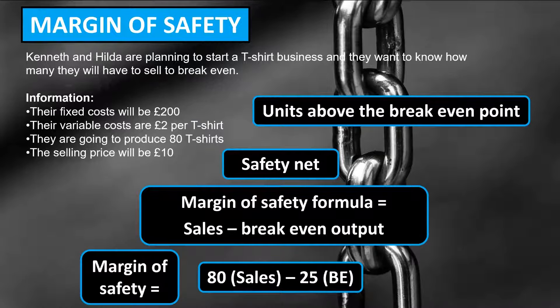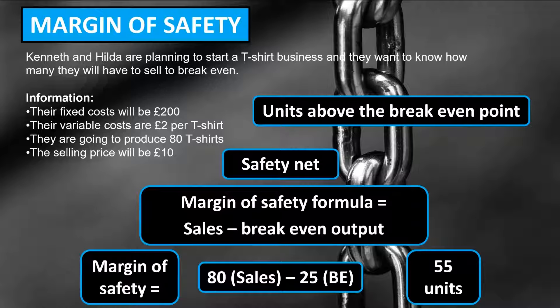The calculation for margin of safety in this scenario is the 80 units predicted to sell minus the 25 units it takes to breakeven, giving a margin of safety of 55 units. This means the business could misjudge their sales forecast by 55 units and still breakeven. If they sold 56 less than predicted, they would be making a loss. So the higher the margin of safety, the safer the investment is for the business.